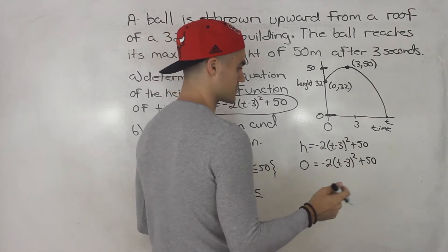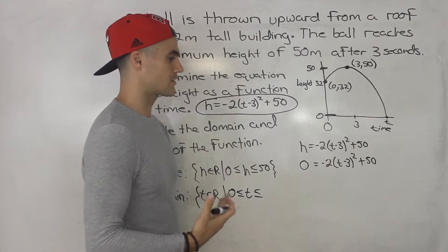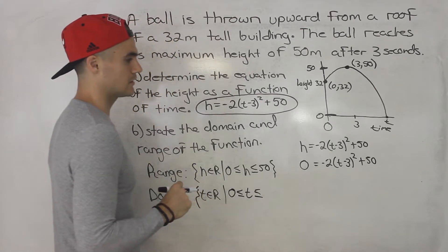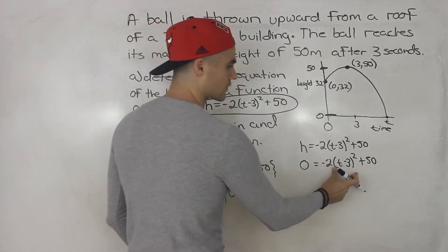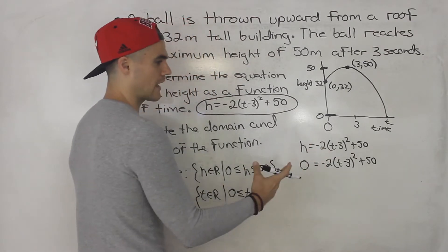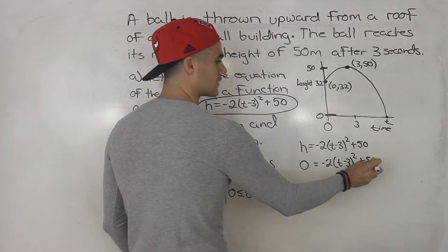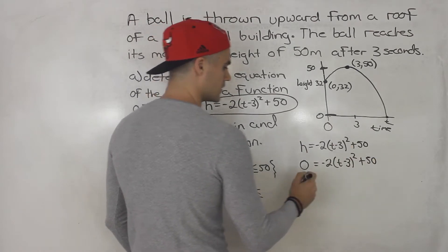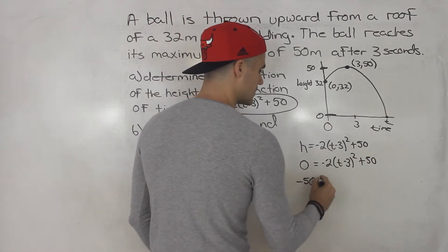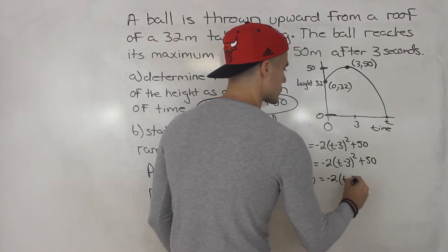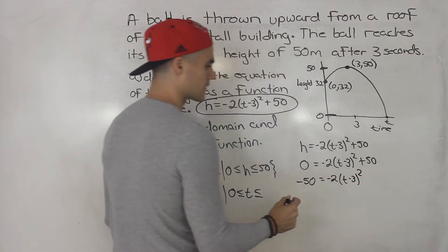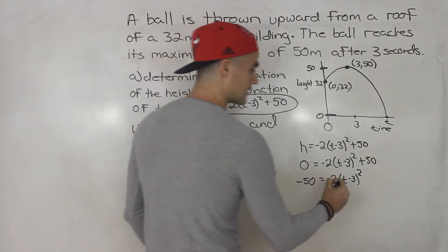simplify all the like terms. Then you could factor it, or you could throw it into the quadratic formula. In this case, I'm going to do it a little bit differently. Because it's already in vertex form, we could sort of algebraically solve for this. We could sort of manipulate it. So we could bring the 50 over, so we'd have negative 50 equals negative 2 t minus 3 squared. We could divide both sides by negative 2.